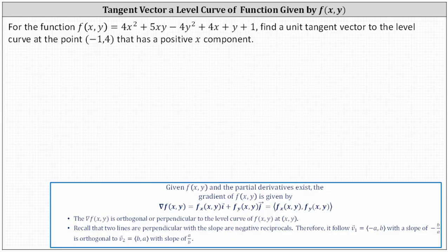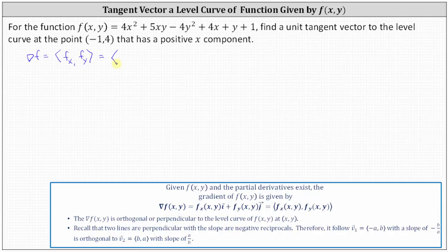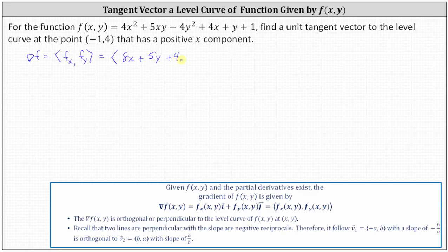To determine a normal or perpendicular vector to the level curve at negative one comma four, we determine the gradient of f, where the x component is the partial of f with respect to x and the y component is the partial of f with respect to y. Differentiating f with respect to x and treating y as a constant, the partial of f with respect to x equals 8x plus 5y plus 4.